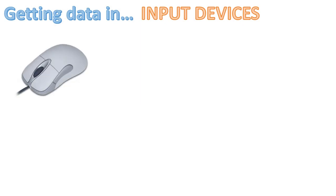So here is a mouse — it's very familiar to many people. It's probably the most common input device along with a keyboard. This mouse allows you to click on icons, select buttons, and highlight text. It's actually a really important input device and there are different kinds.